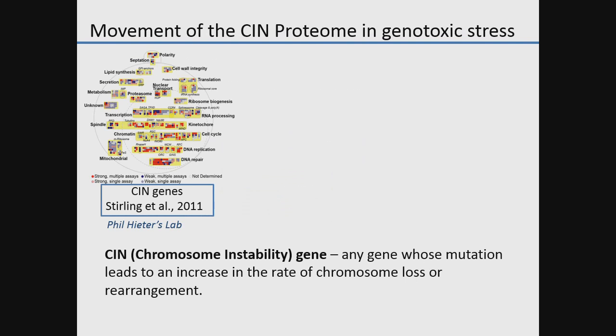My favorite genes have always been genes whose mutation leads to chromosome instability. CIN genes are any gene whose mutation leads to an increase in the rate of chromosome loss or rearrangements that lead to marker loss. When I was a postdoc in Phil Heater's lab, we spent a lot of time cataloging all the genes in yeast that lead to chromosome instability phenotypes.